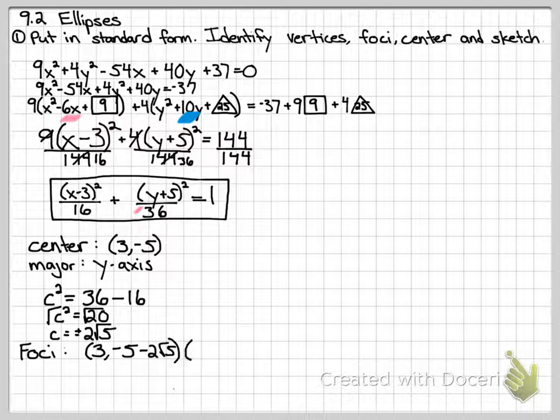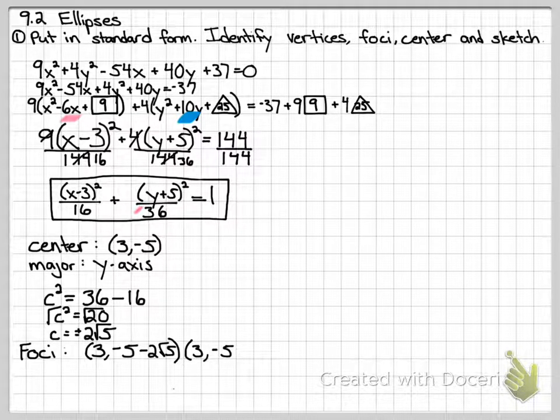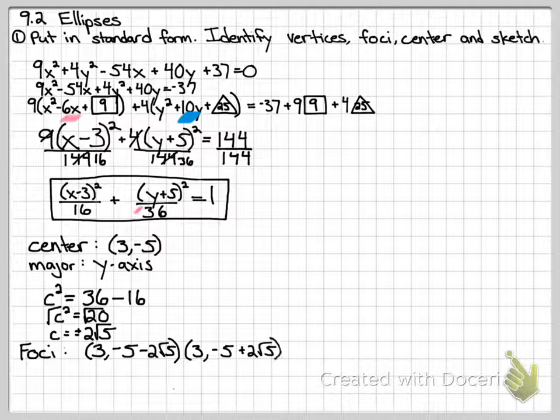The other foci is still going to be at 3. The x value is not changing because the major axis is the y axis, and it's going to be a little higher than the center. So the center was negative 5, and higher means that I'm doing plus 2 root 5. So there's our foci.